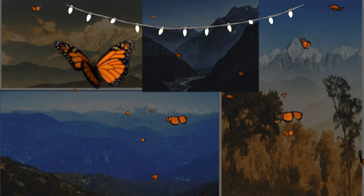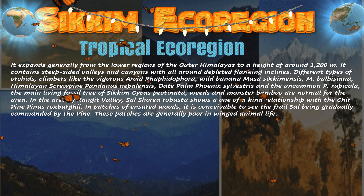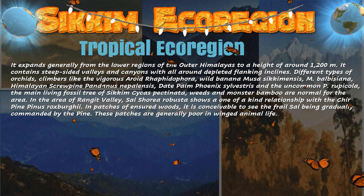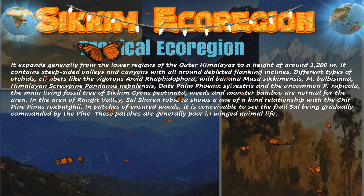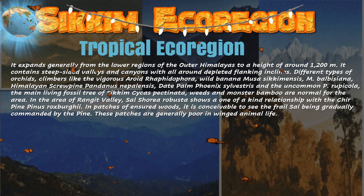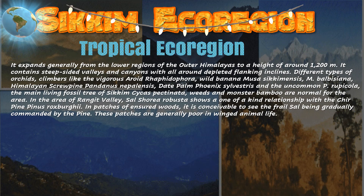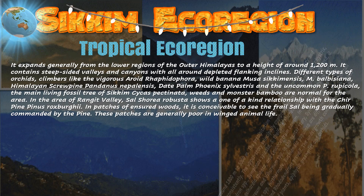Let's talk about Sikkim's eco-regions. The first is the tropical eco-region, which extends generally from the lower region of the outer Himalayas to a height of around 1,200 meters. It contains deep-sided valleys and canyons. Different types of orchids, climbers like Raphidophora, wild banana Musa sikkimensis, Himalayan Screw Pine Pandanus nepalensis, and the main living fossil tree of Sikkim, Cycas pectinata, are found here. Weeds and monster bamboos are typical of this area. In the Rangit Valley, Sal Shorea robusta shows a unique relationship with the chir pine Pinus roxburghii. These patches are generally poor in birdlife.